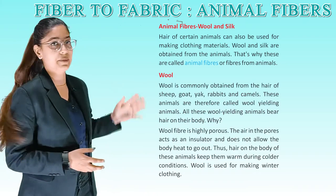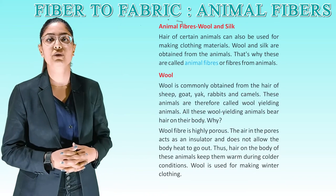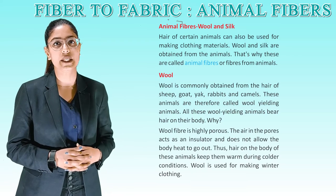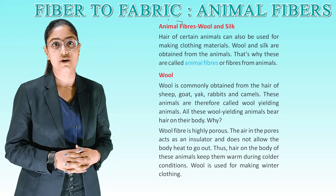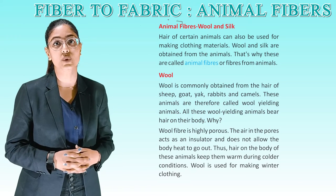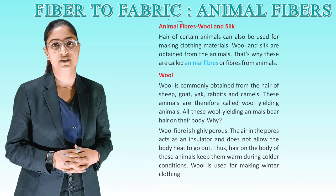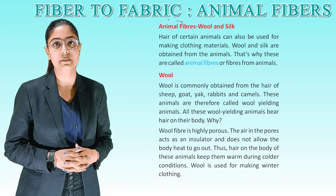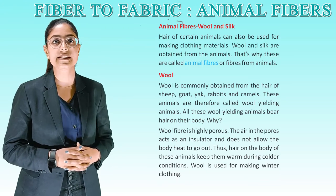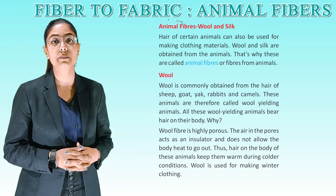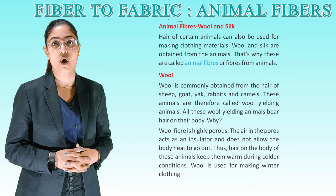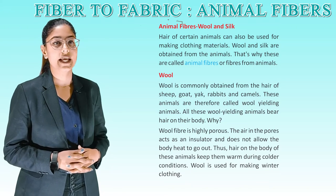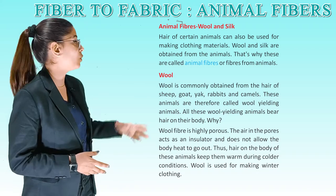Animal fibers: wool and silk. Hair of certain animals can also be used for making clothing materials. Wool and silk are obtained from animals. That's why these are called animal fibers, or fibers from animals.